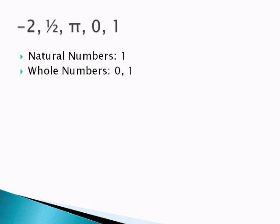If I ask for whole numbers, though, that does include 0. So we have 0 and 1. Integers would be the next category. Integers are both positive numbers and negative numbers. So that's going to be negative 2, 0, and 1.